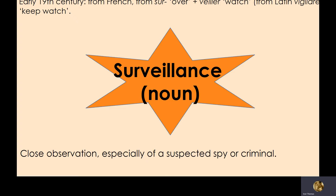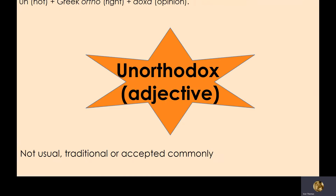Unorthodox — the Greek 'ortho' means 'right' and 'dox' means 'teaching' or 'path' or 'way'. So unorthodox means not the right way, not usual, not traditional, not something you'd accept in common life. An unorthodox person is somebody unusual, suspicious, someone to be feared — a rebel, if you like.